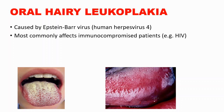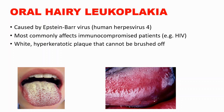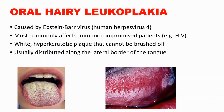It most commonly affects immunocompromised patients — for example, it can affect HIV patients and organ transplantation patients. These are white hyperkeratotic plaques that cannot be brushed off. In oral candidiasis, we can scrape the lesion, and it is usually distributed along the lateral border of the tongue — another way to differentiate these two lesions.